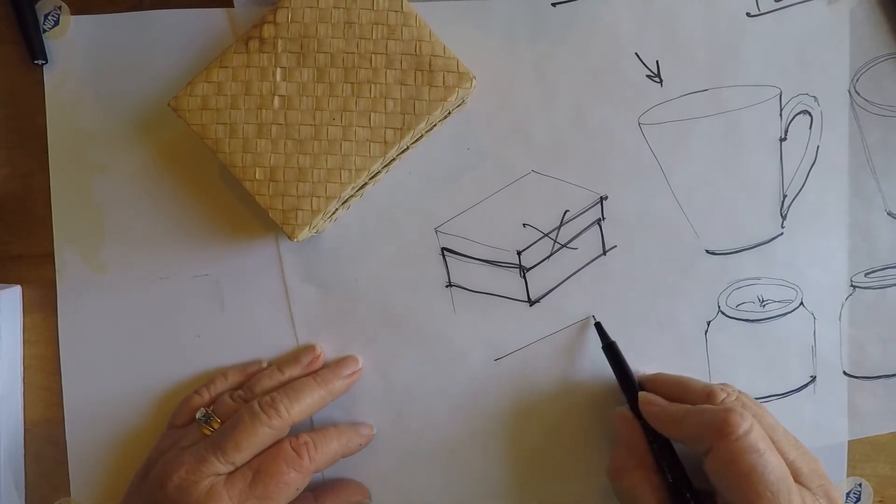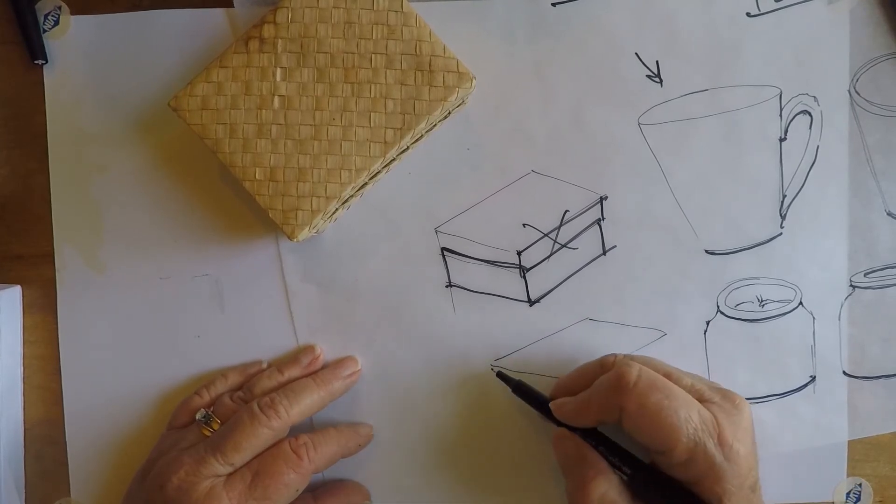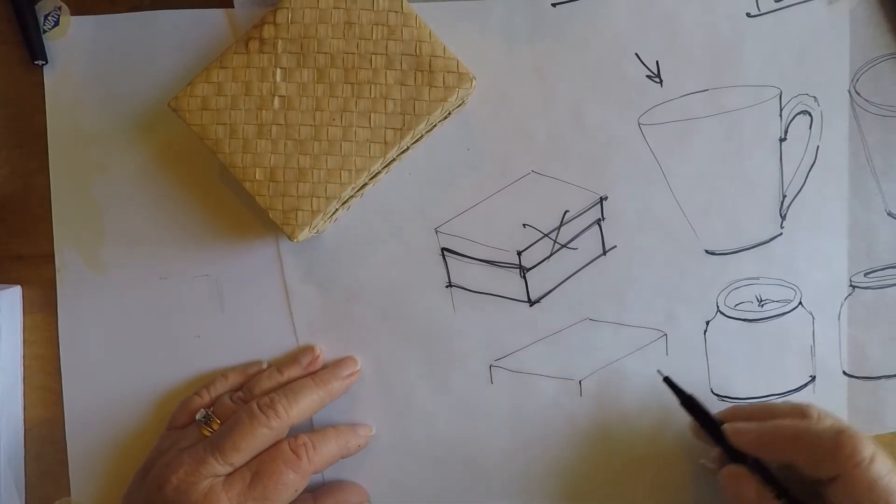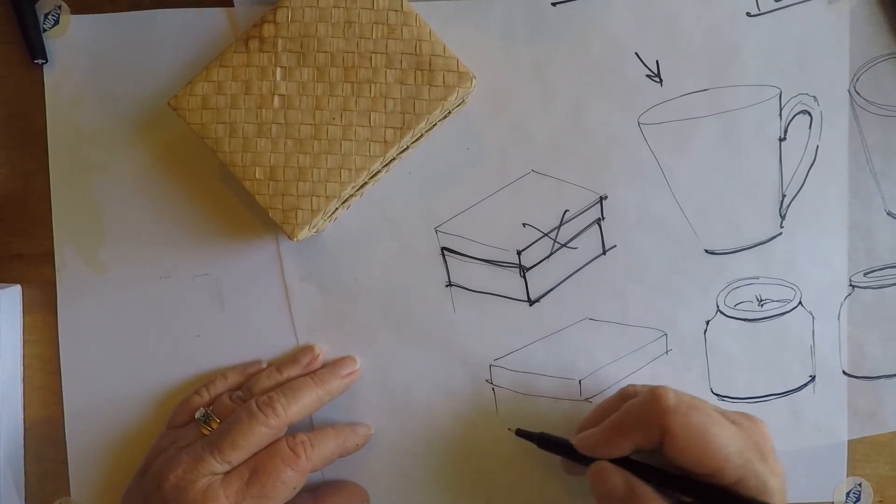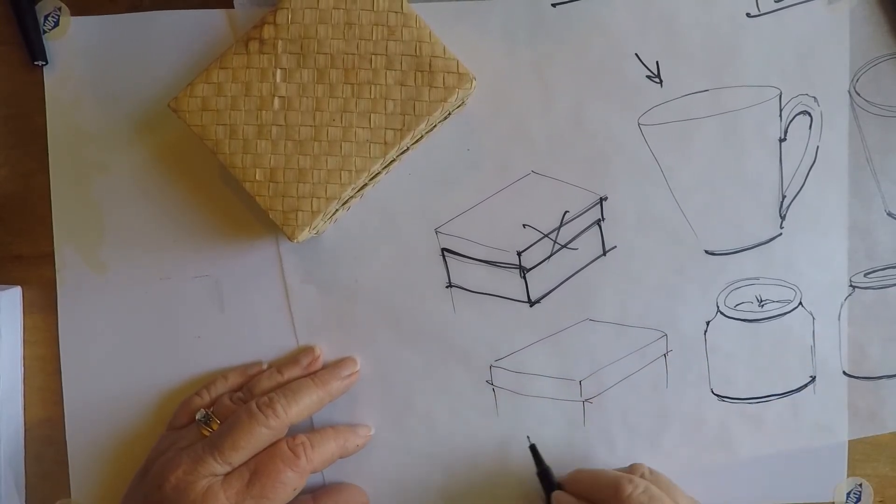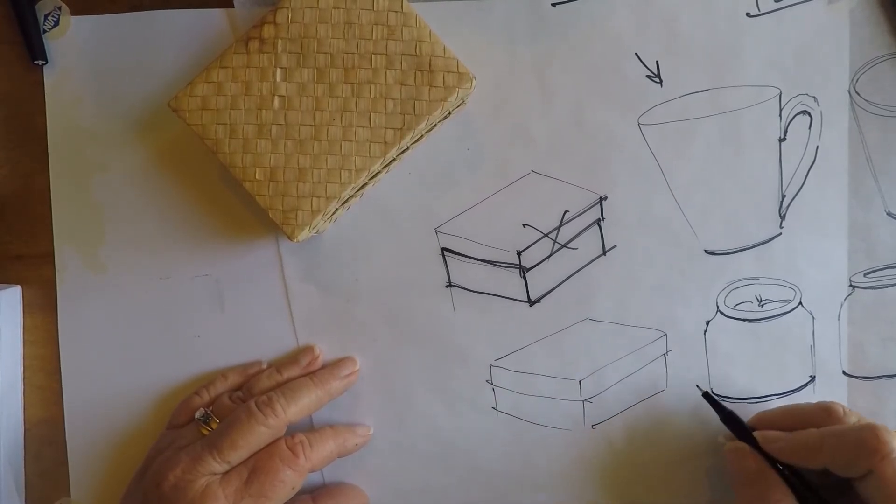So let's try that again with a lighter touch. So I'm going to do a light line weight on the top. Medium on the sides. Yeah, I'm trying to, instead of going back and forth, I'm just trying to use my full arm movement.